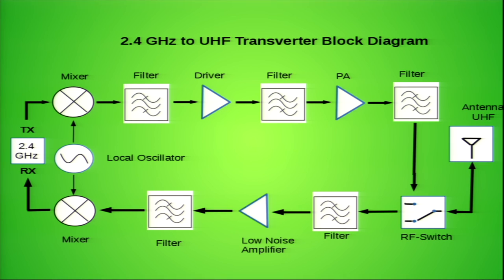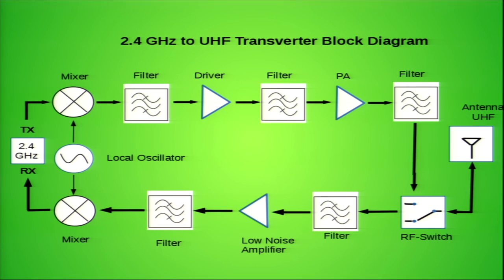There are two mixers — one for the reception path and one for the transmission path — and the output is filtered to remove unwanted frequencies. In the transmission path there is a driver, a filter for impedance matching, a PA, yet another filter, an RF switch, and then the signal goes to the antenna. In the receiving path the RF switch is switched by a GPIO, then the signal is filtered, amplified, filtered again, and mixed back to the 2.4 GHz frequency. The circuit is very widely configurable — you can mix it to almost any frequency sufficient to carry the Wi-Fi modulation, for example down to the 50 MHz range.